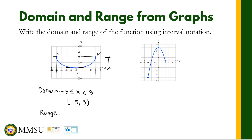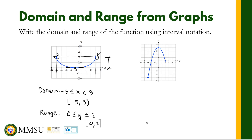Is 0 included? Yes, because it touches the x-axis, so 0 is included. Is positive 2 included? Although there's an open circle at one endpoint, there is a closed circle at this point, so positive 2 is still included in the range. Therefore, the range is Y is greater than or equal to 0 but less than or equal to positive 2. Using interval notation, this is from 0 to 2, closed brackets.